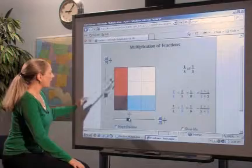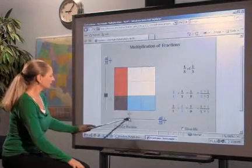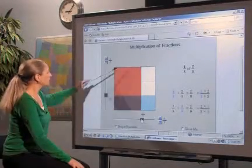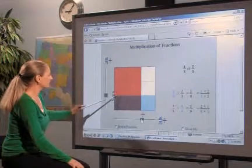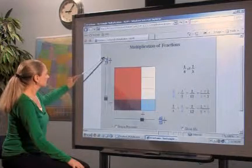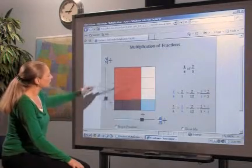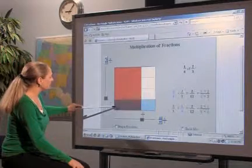1/3 of 1/3 is 1/9. 1/3 of 2/3 is 2/9. 1/4 of 2/3 is 2/12.